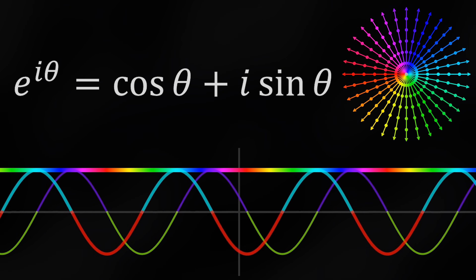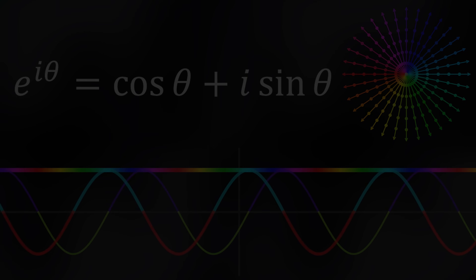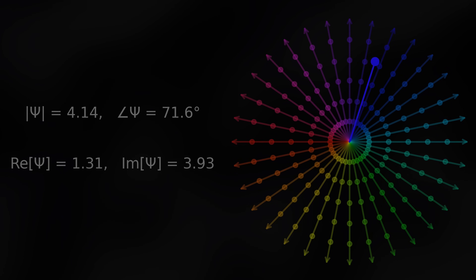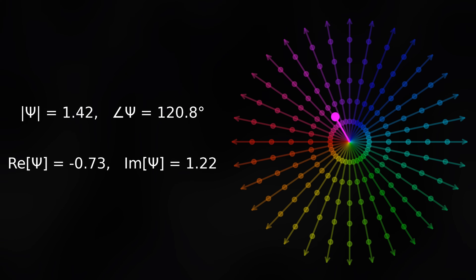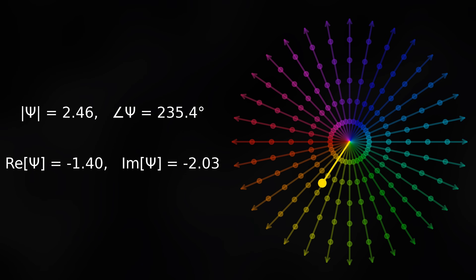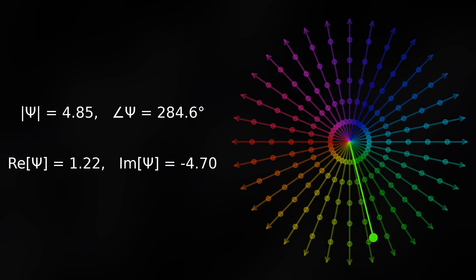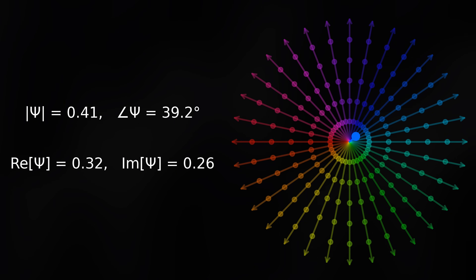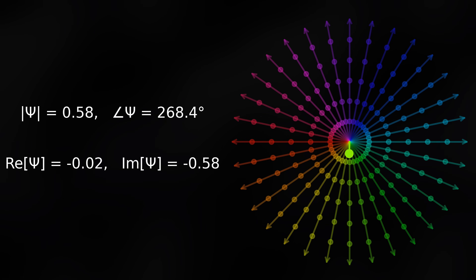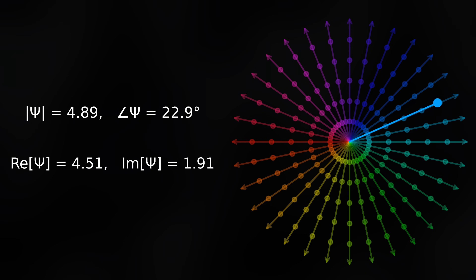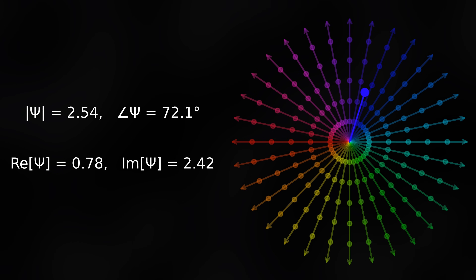A quick note: 'imaginary numbers' is a misnomer — they're just as real as the real numbers. The complex numbers are a holistic numerical structure. This terminology is a consequence of imaginary numbers being named before they were understood — one of Descartes' greatest mistakes, along with dualism.